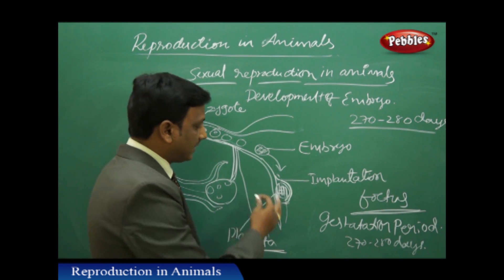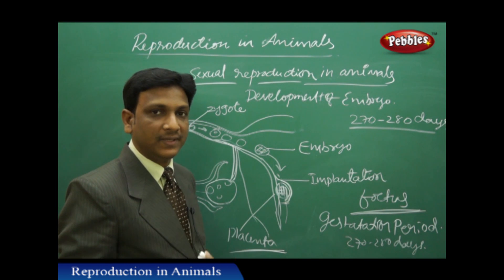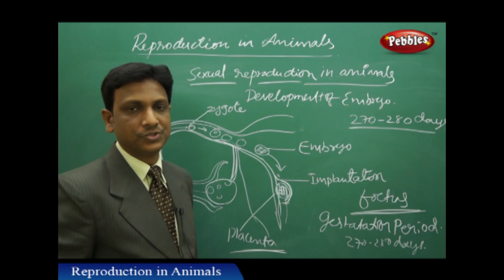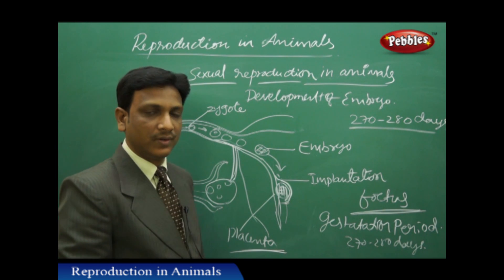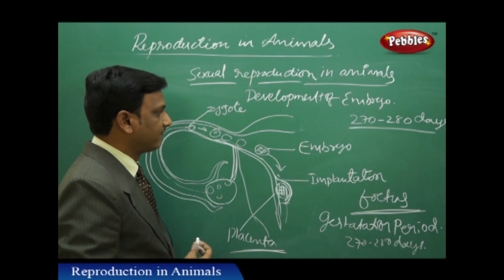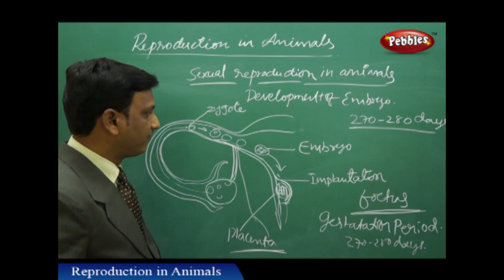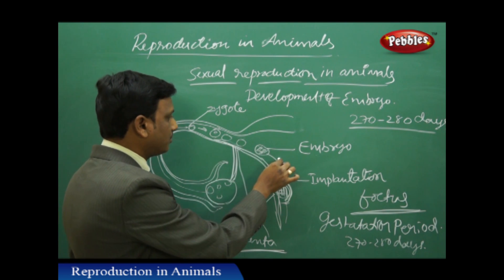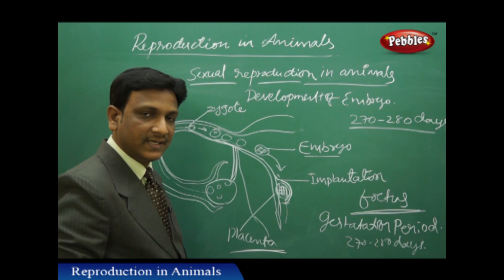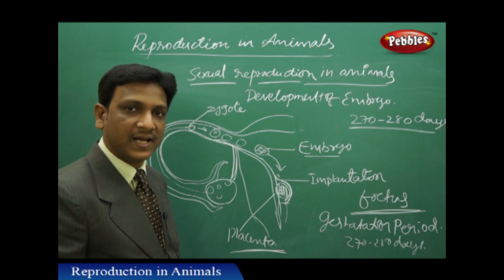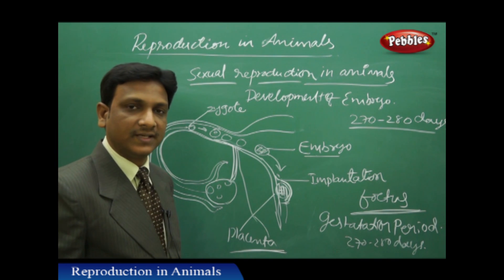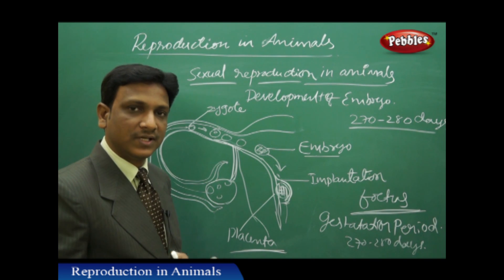After implantation, the embryo develops into a fetus, and the fetus develops into a complete baby. When the complete baby is developed, the baby is born. This is how offspring are produced in mammals like humans. It is internal fertilization — fertilization takes place inside the body of the female. The zygote develops into embryo, embryo into fetus, and the embryo is implanted in the uterus, attached to the wall by the placenta, which provides all the nutrients and oxygen required for it to grow into a baby.